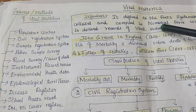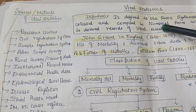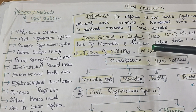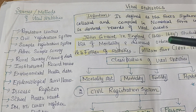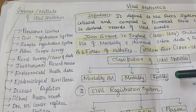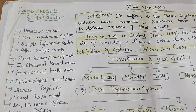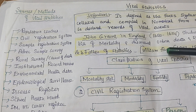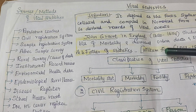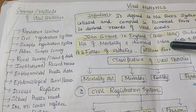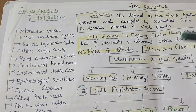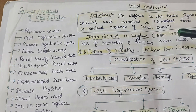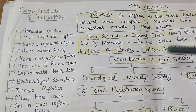First you have to understand what is vital statistics and how they are collecting, what are all the sources, what is the classification and uses. What is vital science? Temperature, BP, pulse — these are called vital signs.